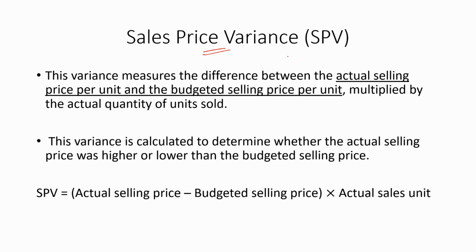Now let's discuss about the sales price variance, which is denoted by SPV. This variance measures the difference between the actual selling price per unit and the budgeted selling price per unit, multiplied by the actual quantity of units sold. It is calculated to determine whether the actual selling price was higher or lower than the budgeted selling price. The formula is: SPV = (Actual selling price − Budgeted selling price per unit) × Actual sales units.